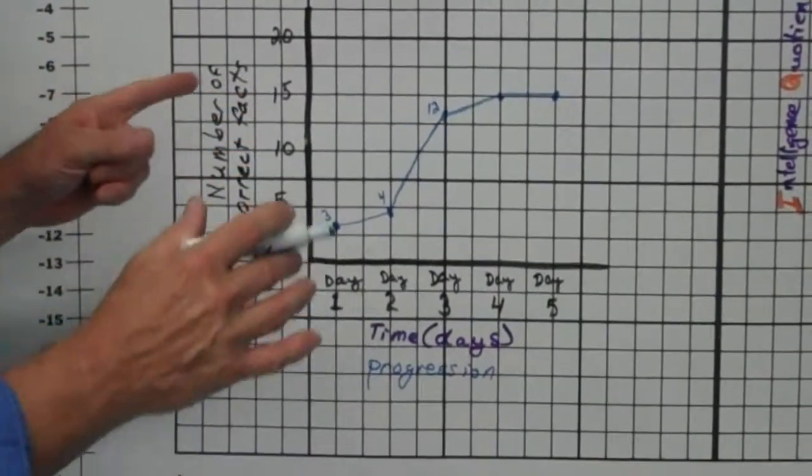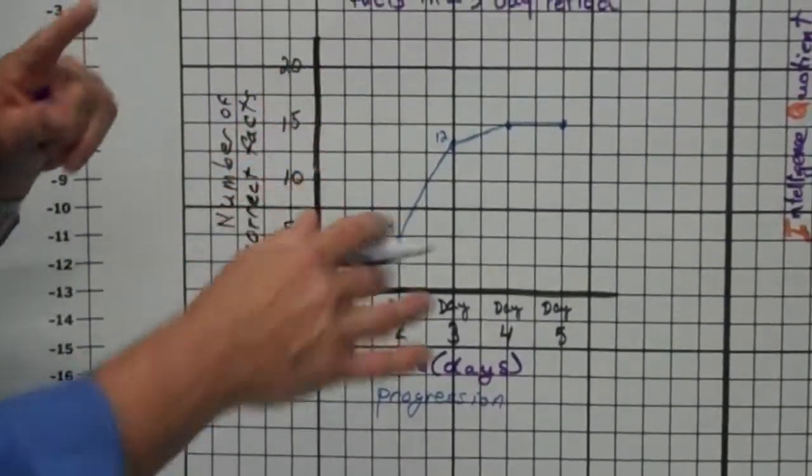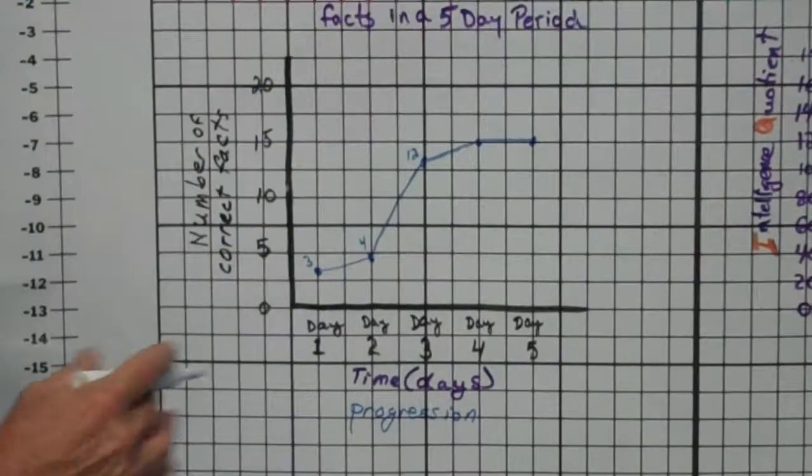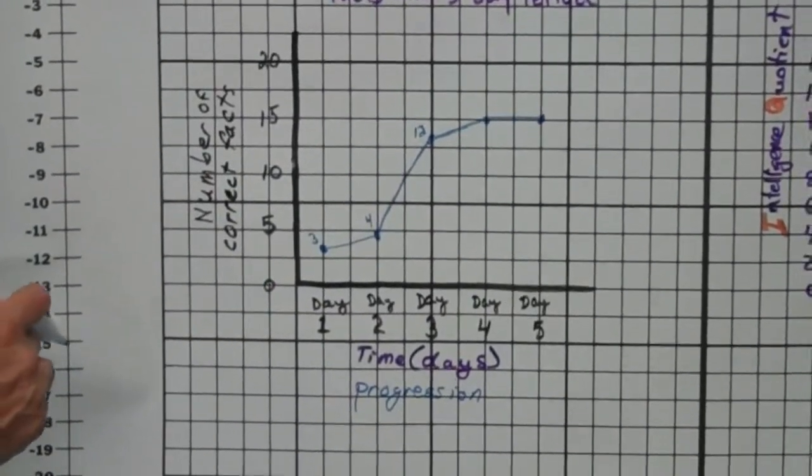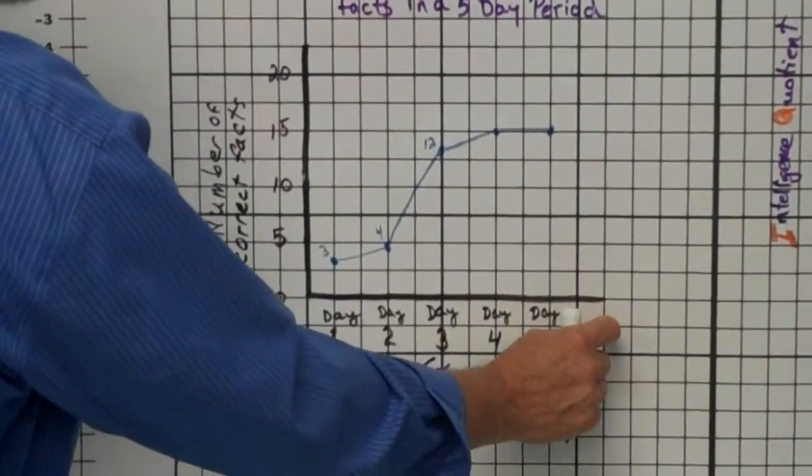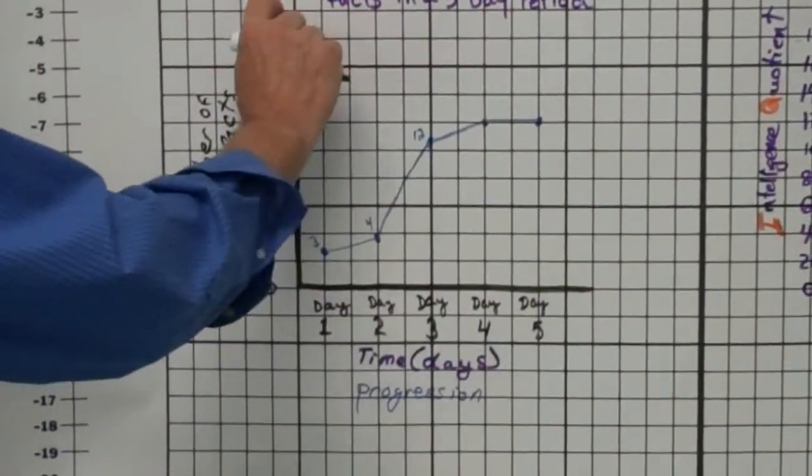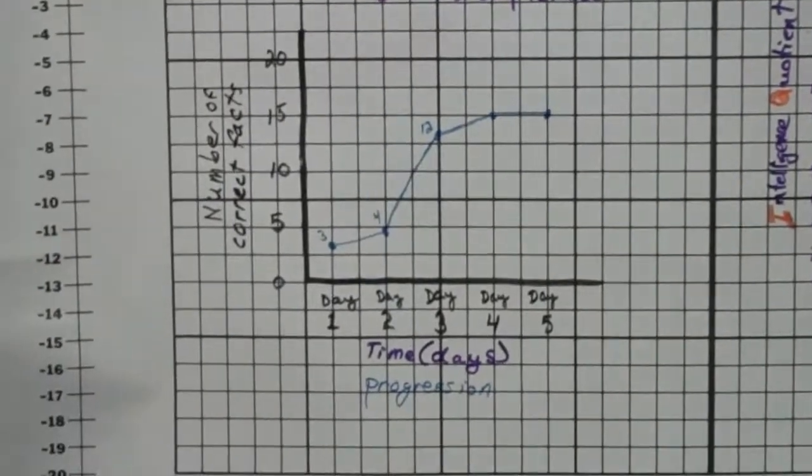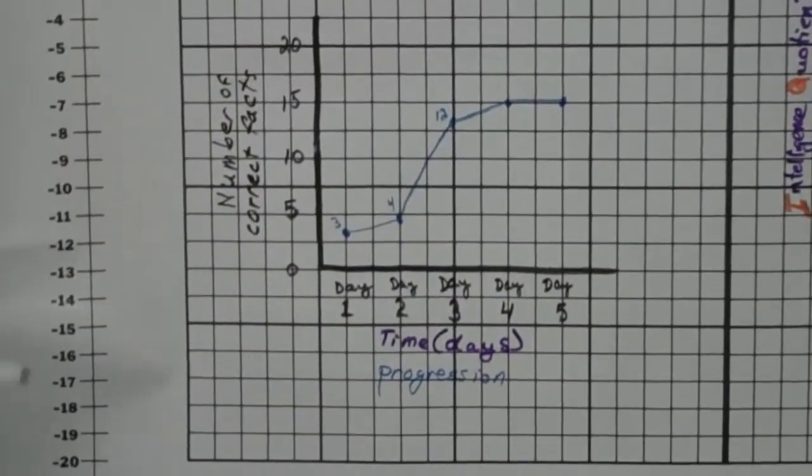But if you do it with a dark pen at first, then you're going to make mistakes. You're going to cross out, white out, and it's going to look ugly. It's got to look good. You'll notice I leave a little space off on the side on the x-axis and a little space up here on the y-axis, too. That's all part of the spacing.